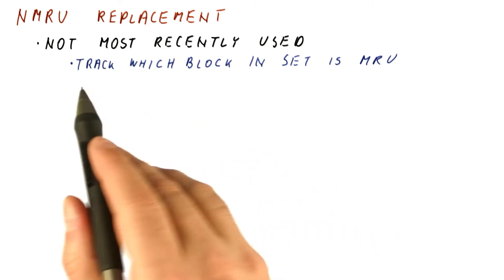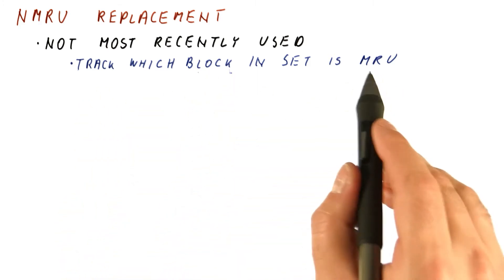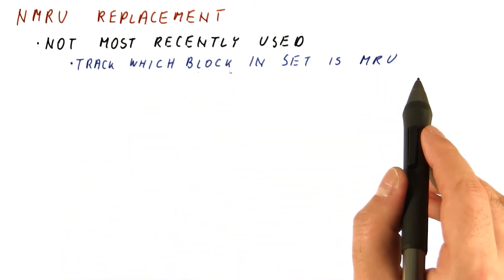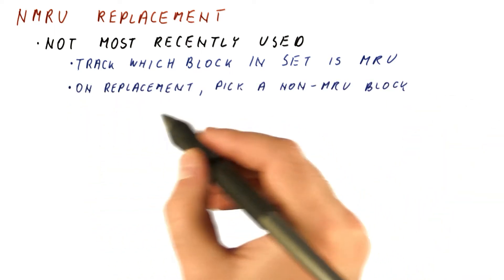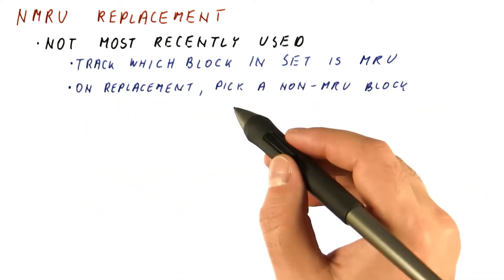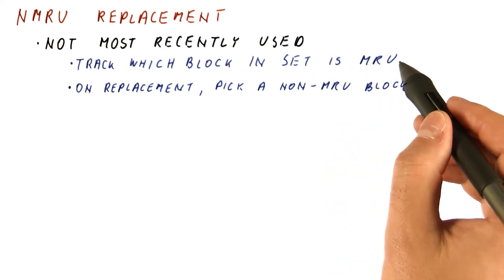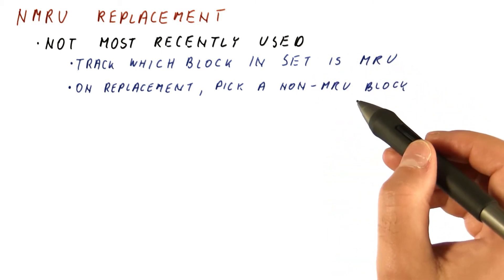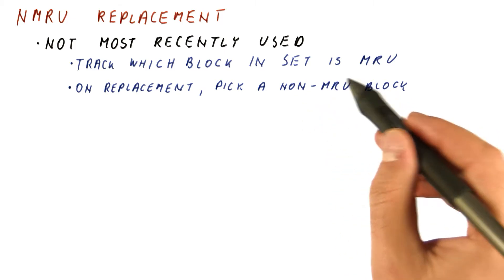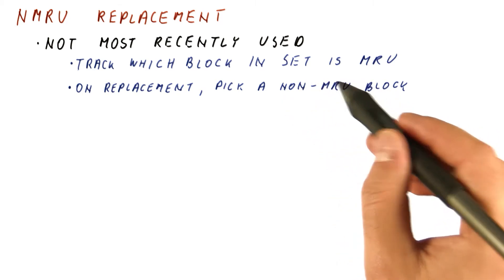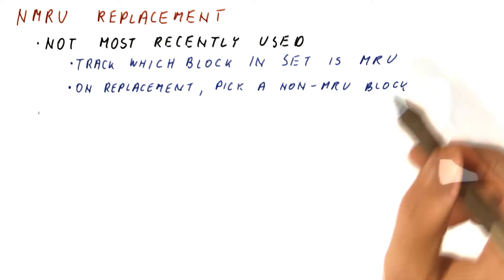The way it works is that we track which one block in the set is the most recently used one at any given time. When we need to replace something, we pick a block that is not the most recently used. For example, we can pick randomly among the other blocks, but we save the most recently used block from eviction from the cache.